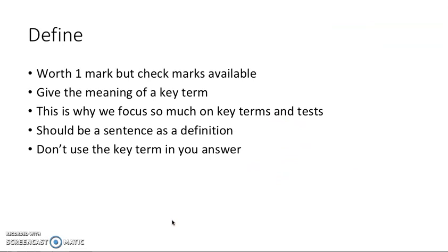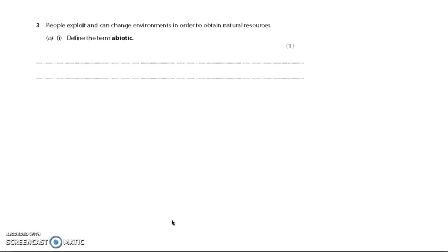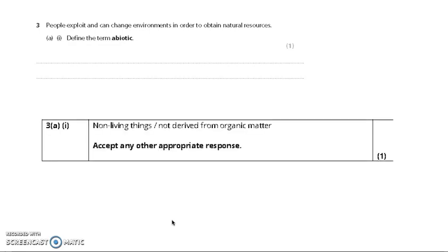Then we look at the defined questions. Now these need to be probably in a sentence for your definition. It's often worth just one mark and it's giving the meaning of a key term. And this is why we focus so much on the key terms and key terms tests within our course. But don't use the key term in your answer. You've got to define it using different words. So again, as an example, define the term abiotic. So you can pause it. Have a go now. And basically, it's one mark for saying non-living things not derived from organic matter. Try not just to give examples. But you could say non-living things such as water and air. You wouldn't lose marks. You wouldn't gain any more marks. But that could be a good way of helping to define it as well.